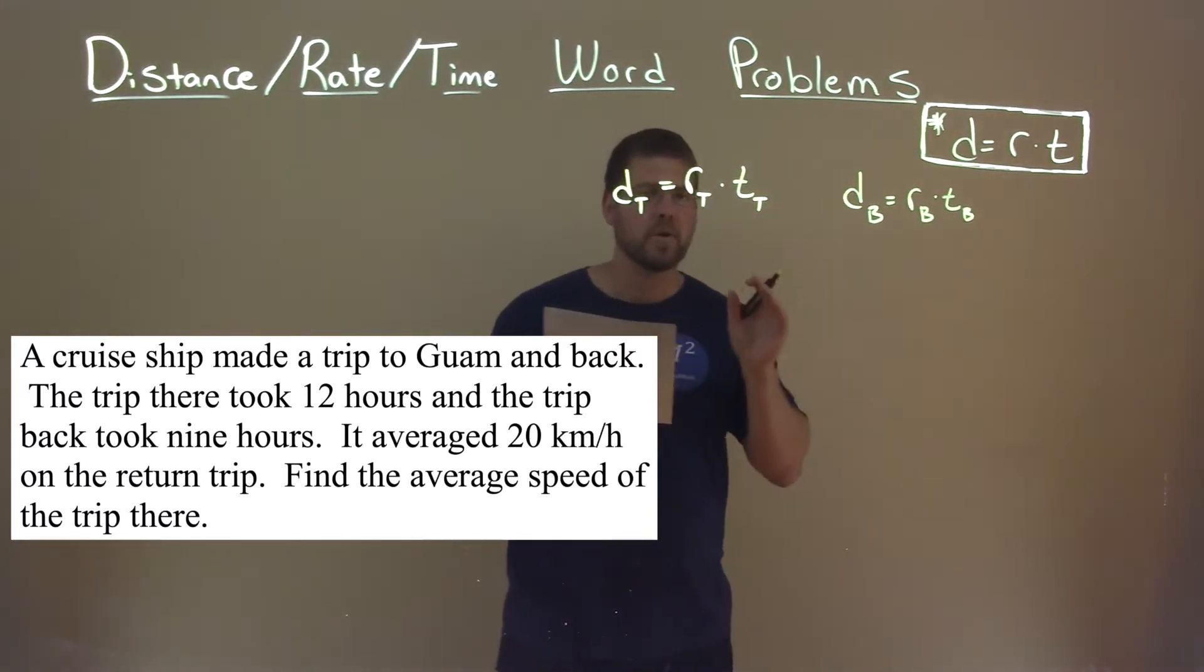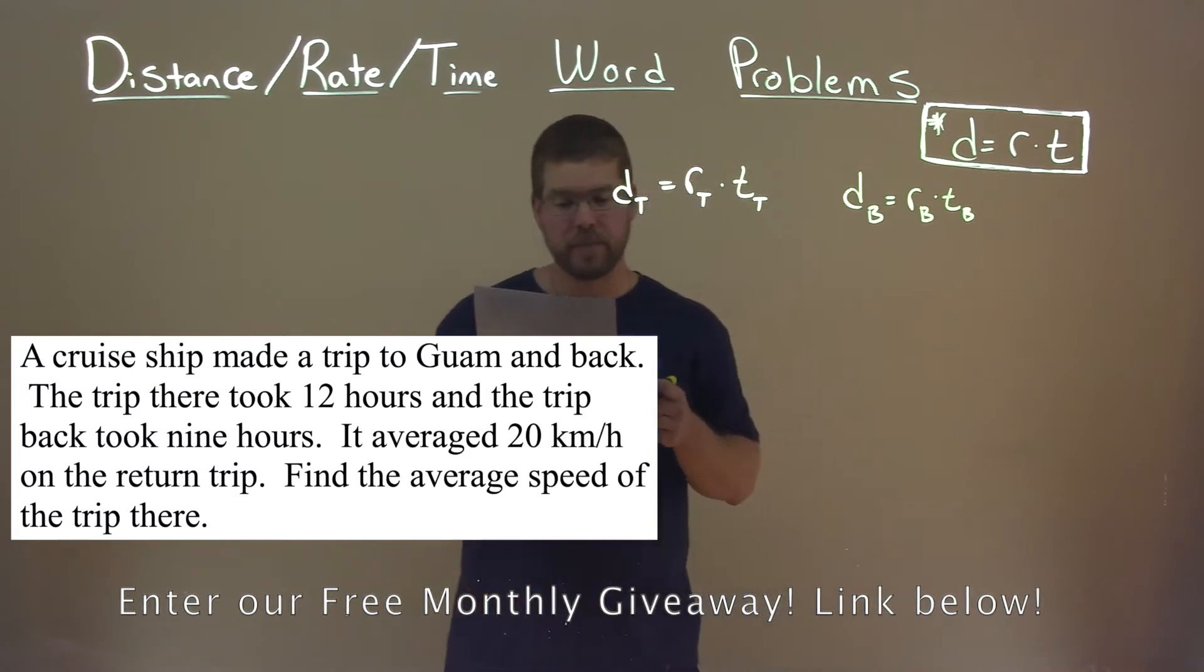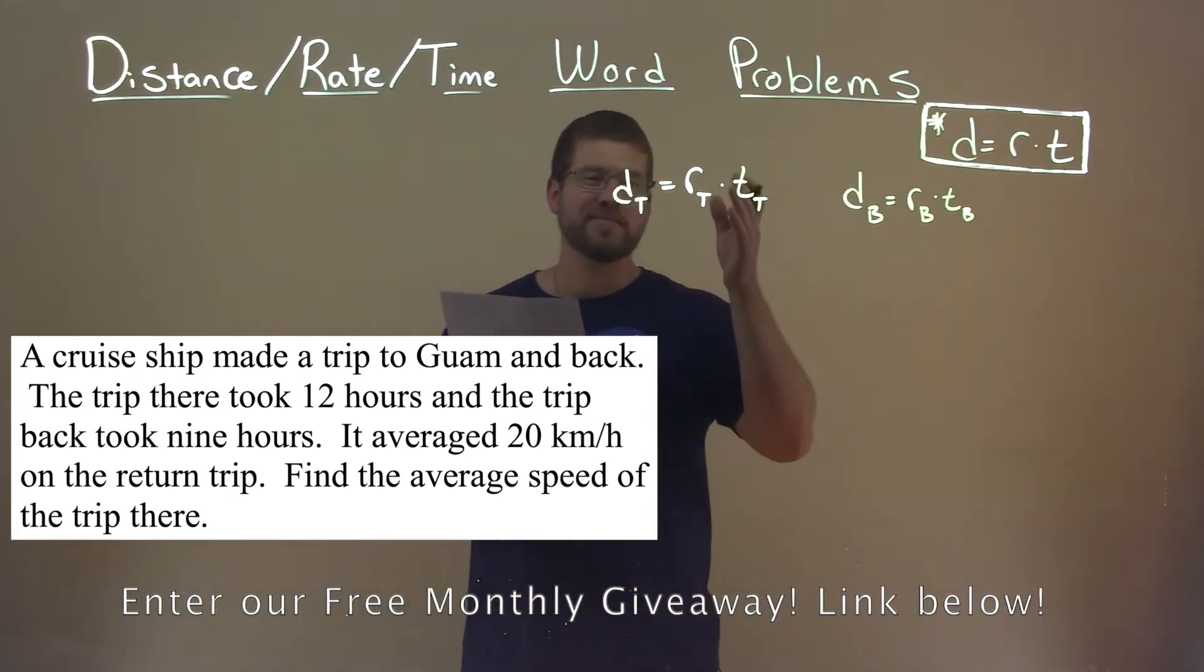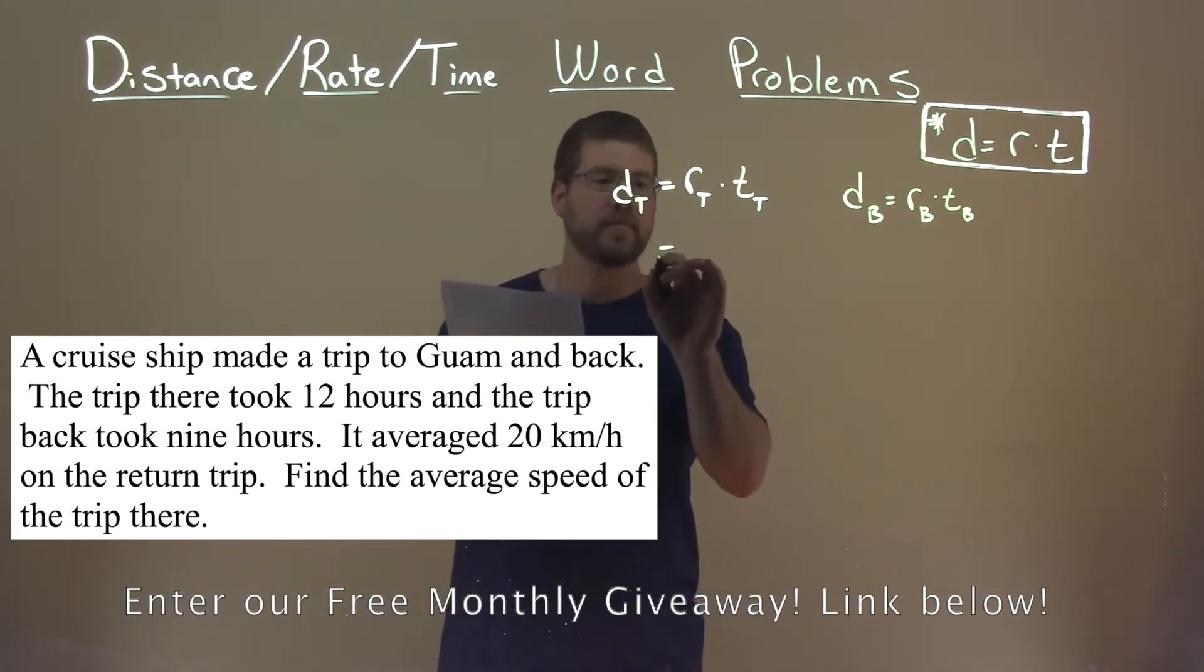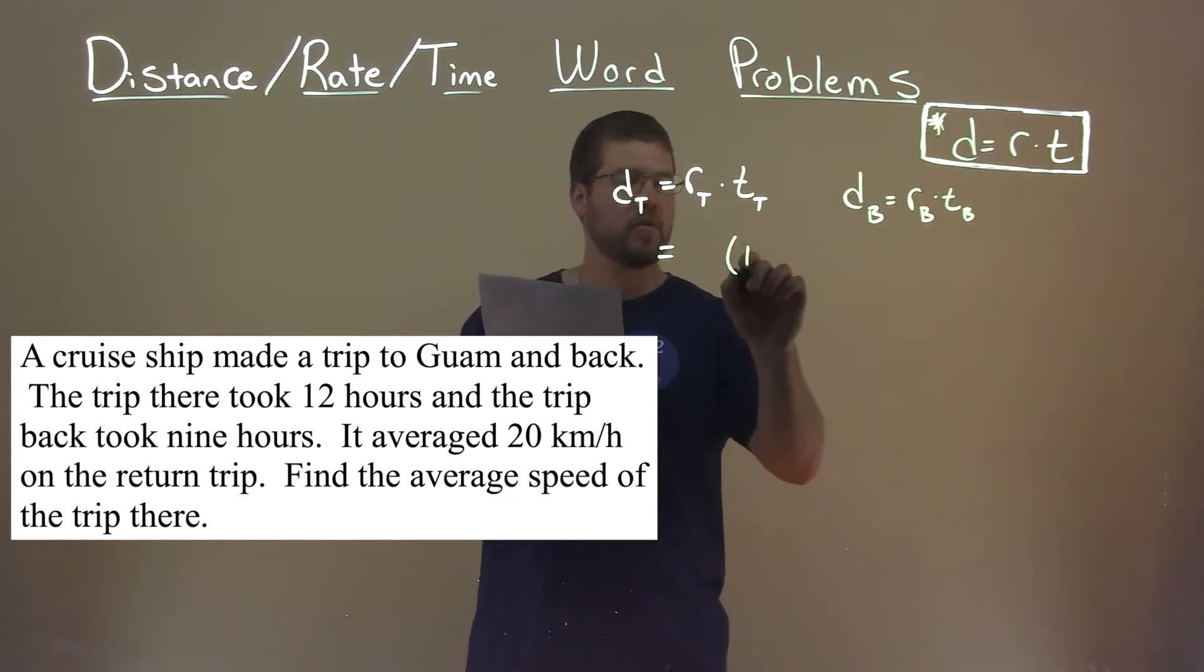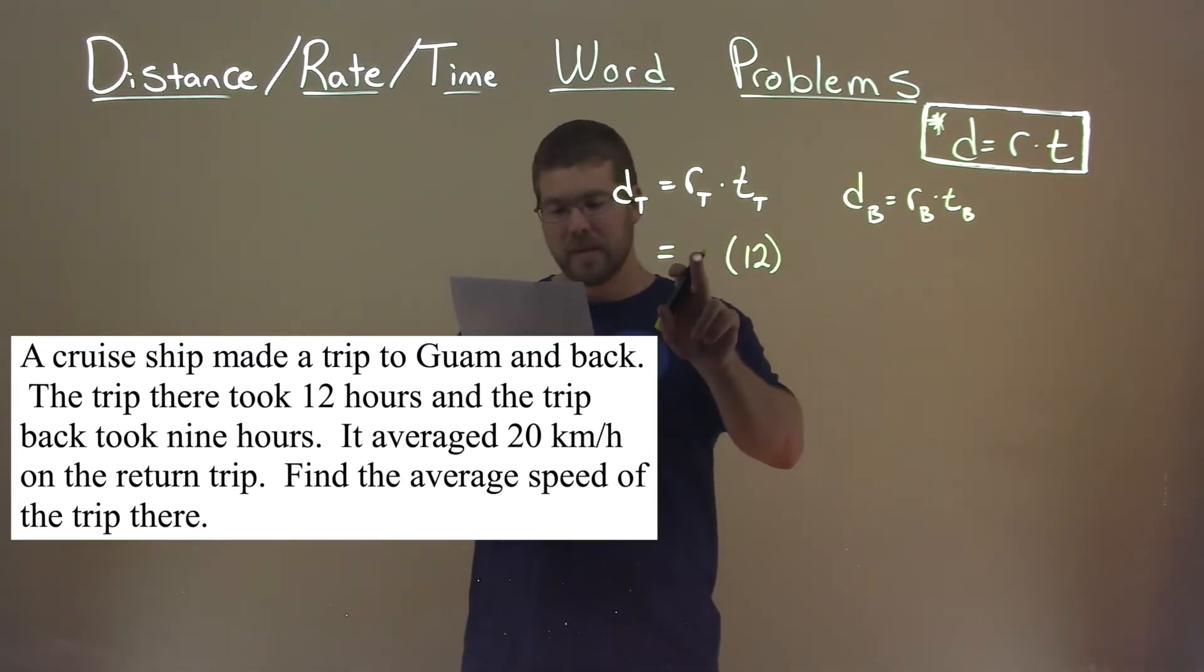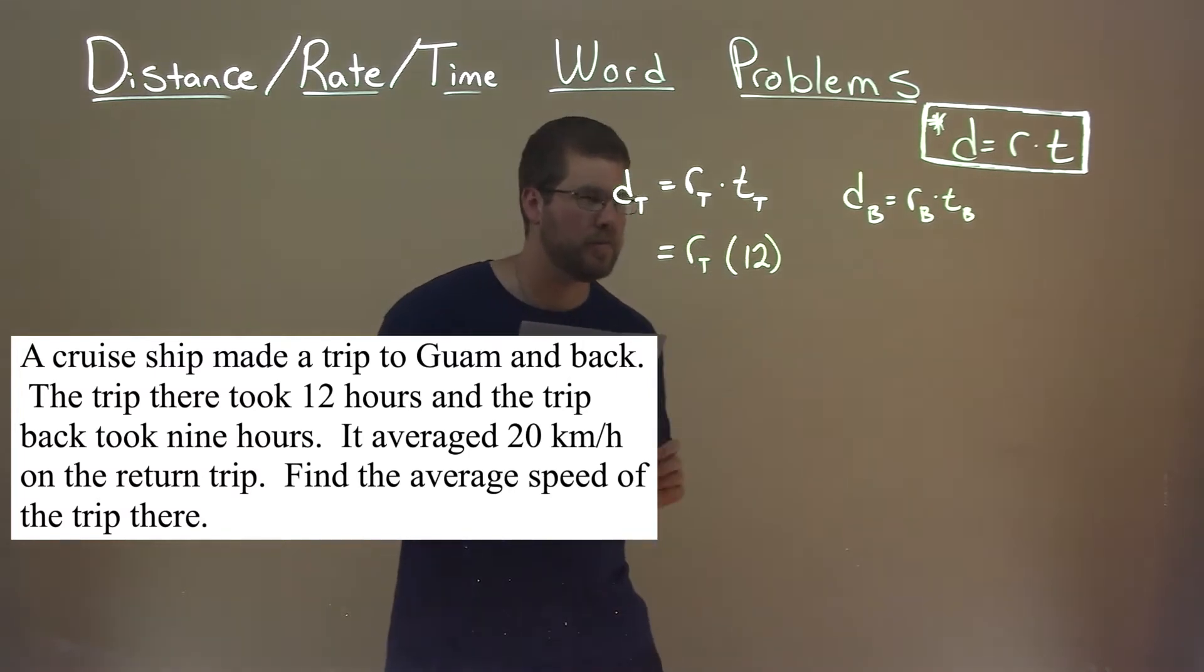Okay, so we're going to use that to plug in what we know from the problem here. The trip there took 12 hours. So we know that the trip there, t_t, took 12 hours. And we want to find the average speed getting there, the rate at which we travel there. So that's still our variable, r_t. And that equals d_t.